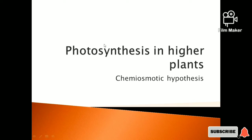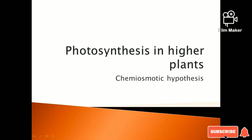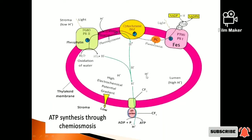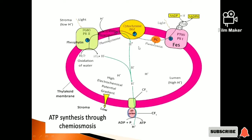Now we are going to discuss the topic: Chemiosmotic Hypothesis for the synthesis of ATP in the chloroplast. This is the Chemiosmotic Hypothesis, proposed by Peter Mitchell, a scientist. This is the ATP synthesis.